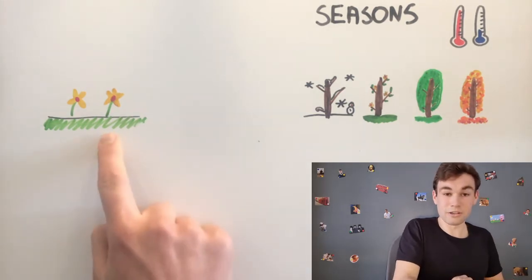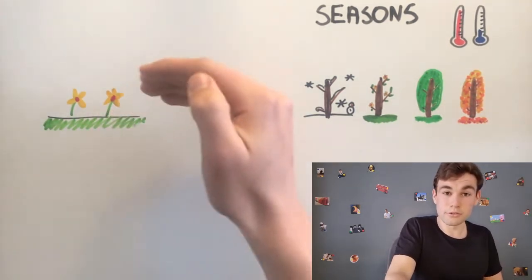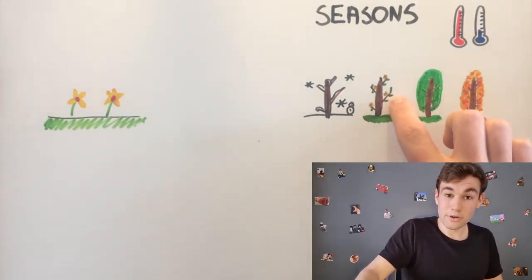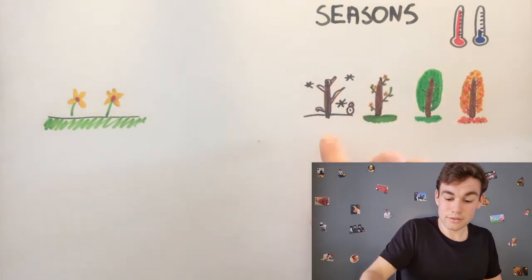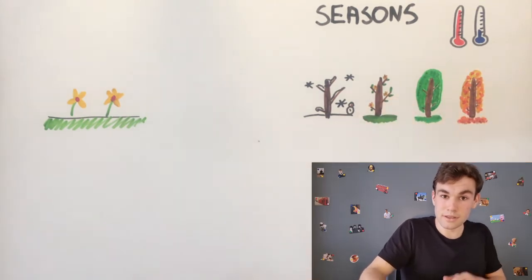The grass grows and flowers grow, and leaves on the trees. This is a tree. The leaves appear.